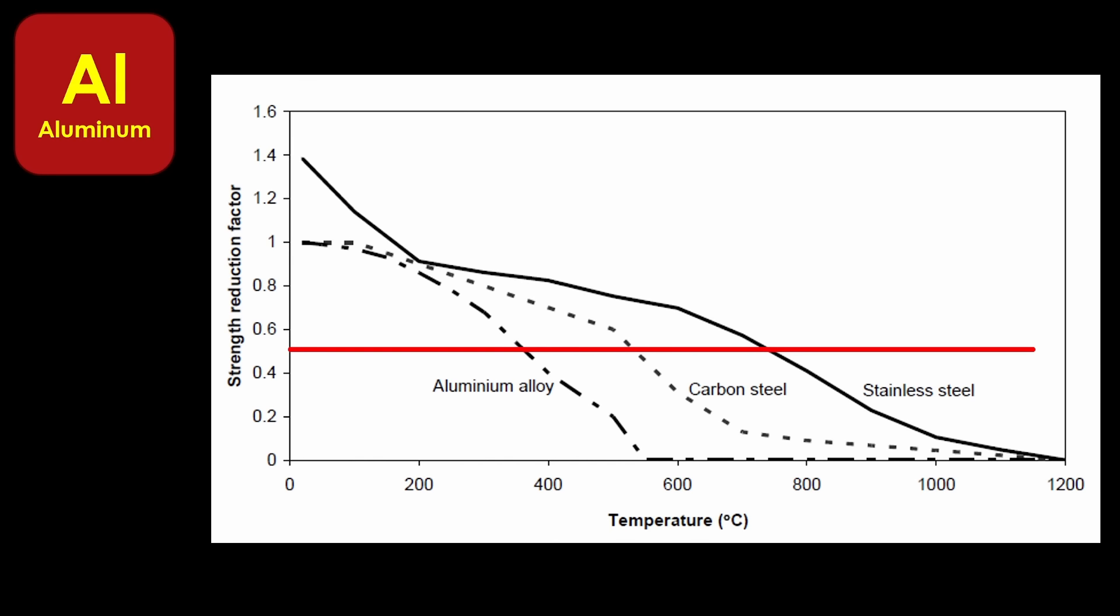And here's the problem with aluminum for Starship. The red line shows the point where a material has lost half of its strength. We see that stainless has 50% of its strength up to about 800 degrees centigrade. Aluminum alloys lose half their strength before the temp reaches 400 degrees. Any issues with your thermal protection system, and your structure melts away.